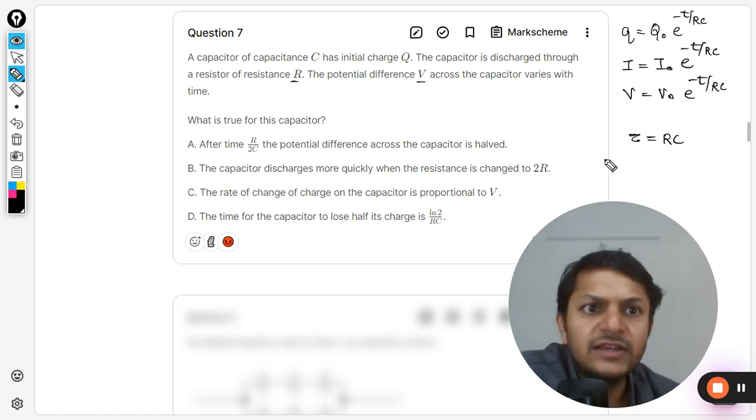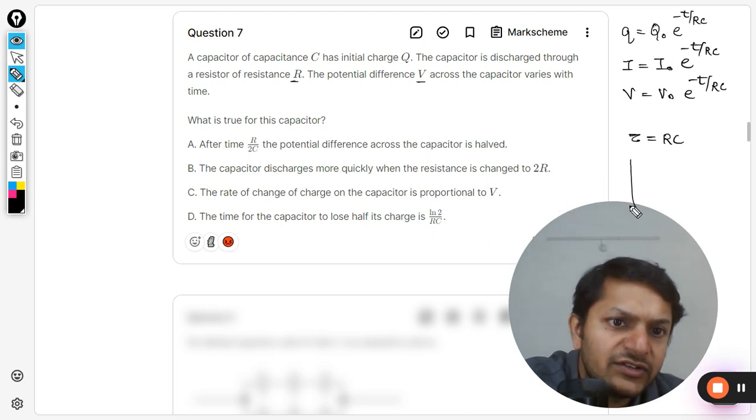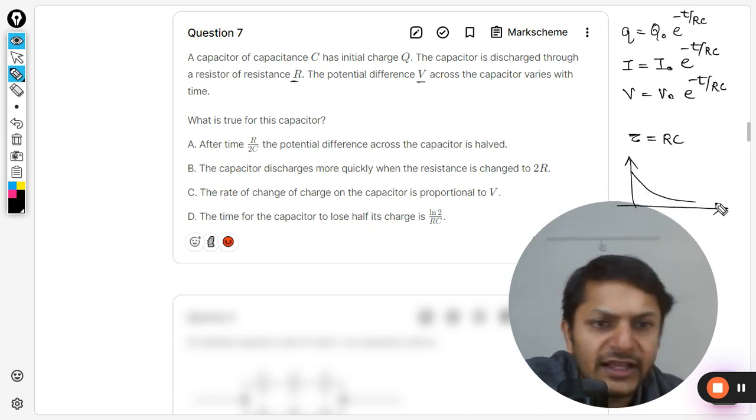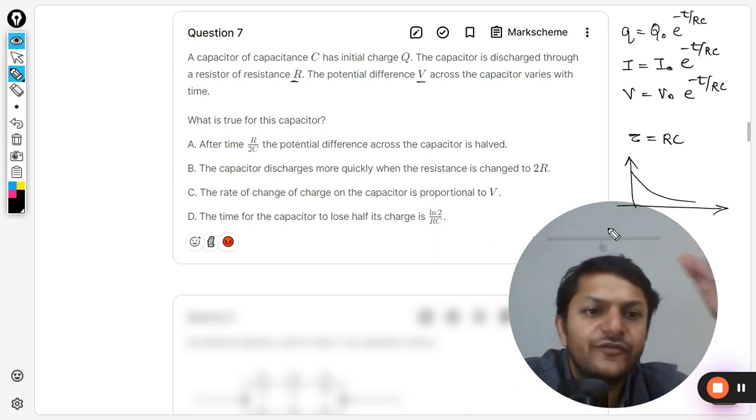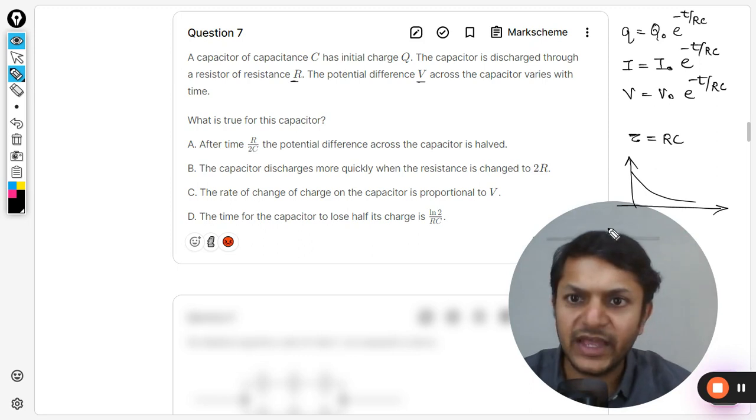So tau is equal to RC. This is what is going to happen, and all of the variations are following the exponential decay like this. Every variable is following this pattern to decrease.